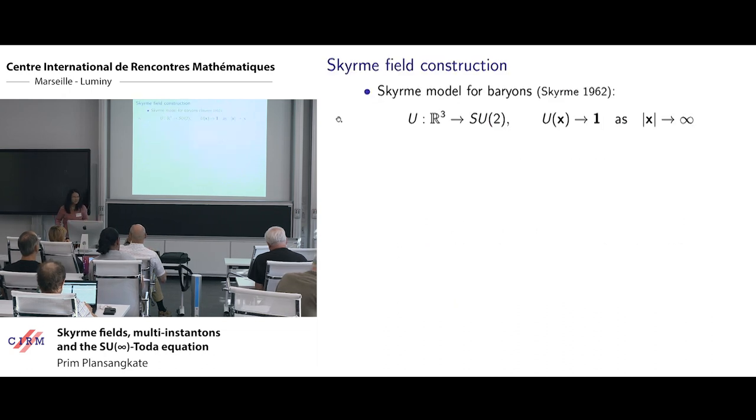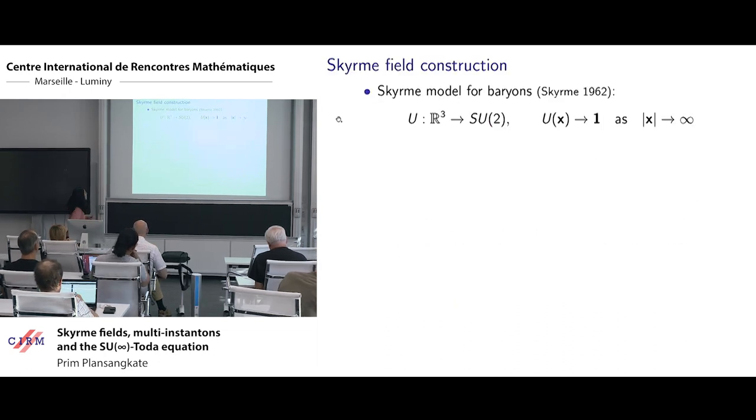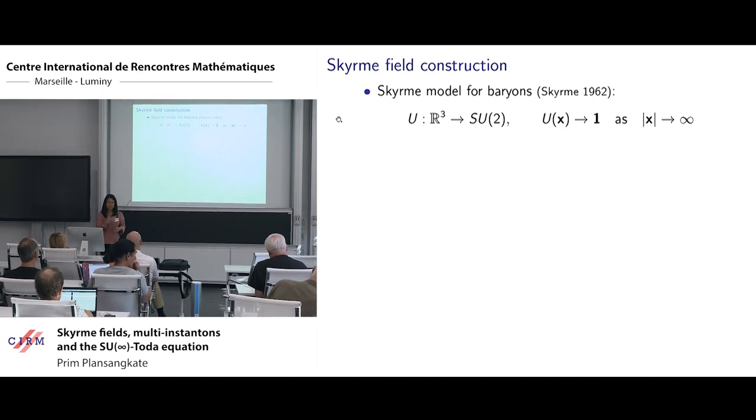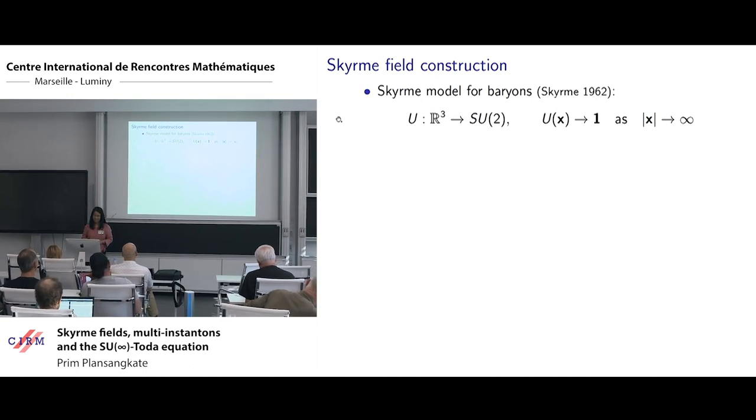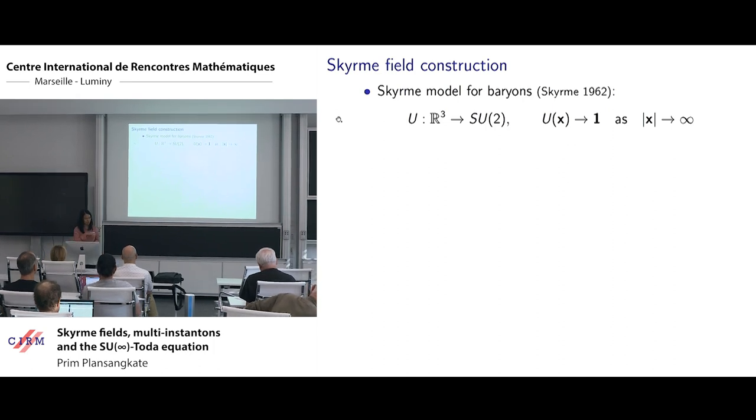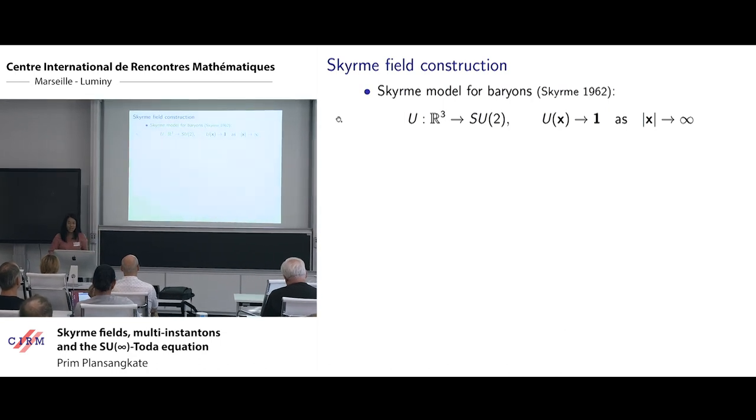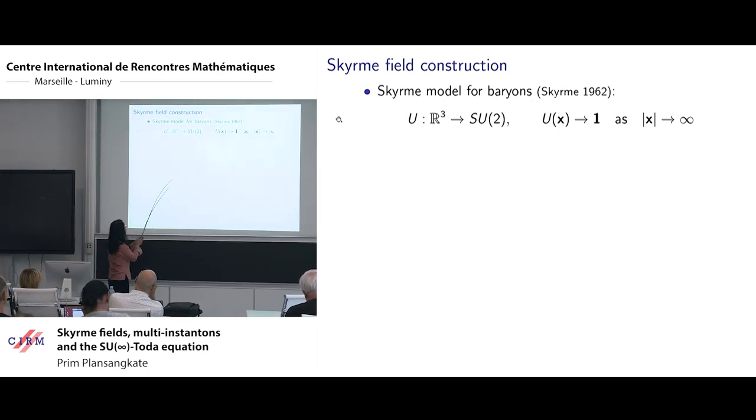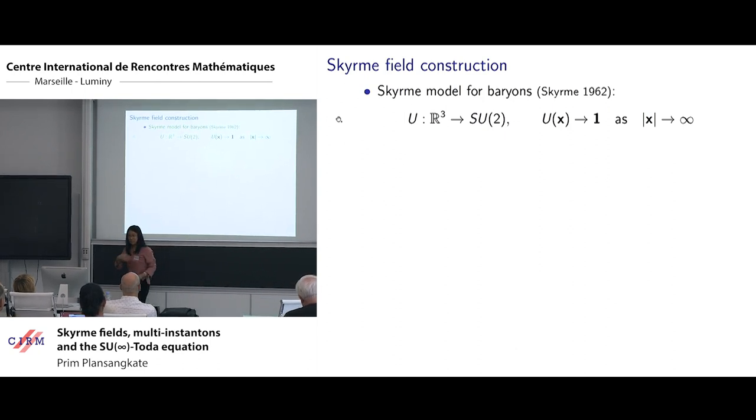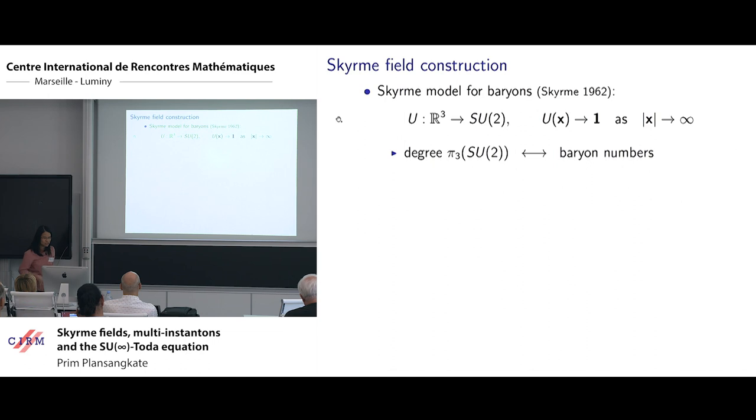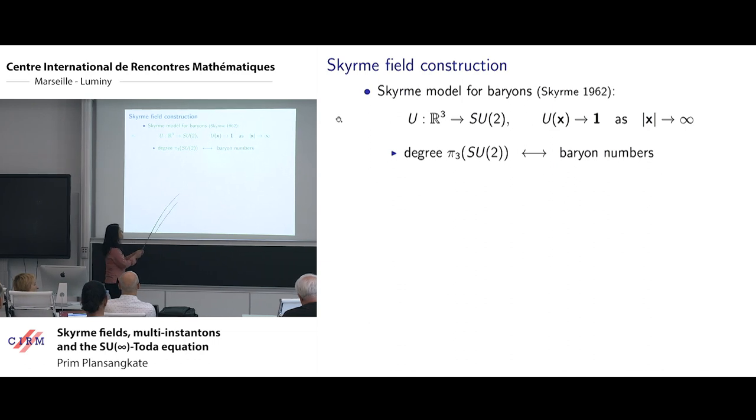Let's start with the Skyrme field construction. The Skyrme field is SU(2) valued and it is defined on the four dimensional Minkowski space. But we are interested in static solutions because those are critical points for the energy functional. So at a given time, you have a map from R3 to SU(2).